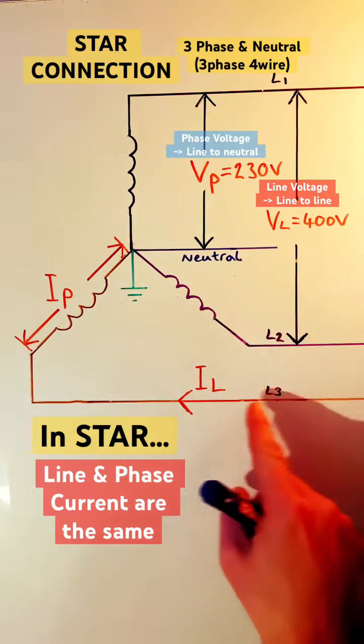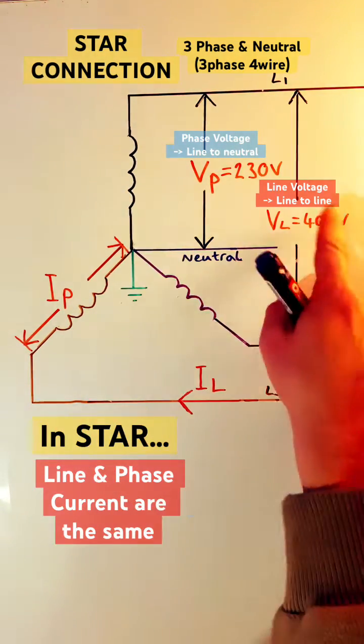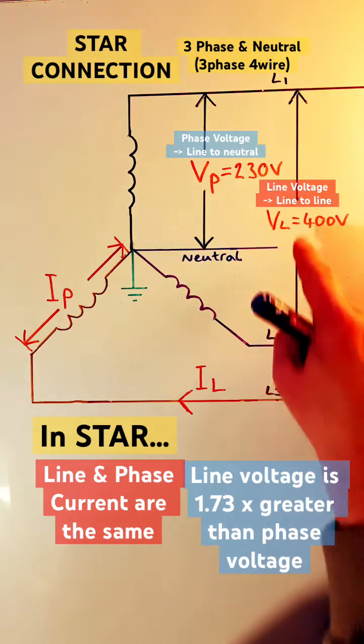In a star connected load, the line currents and the phase currents are the same, but the line voltage is greater than the phase voltage.